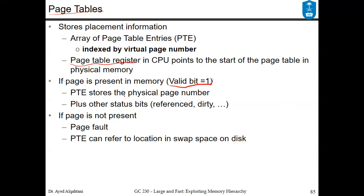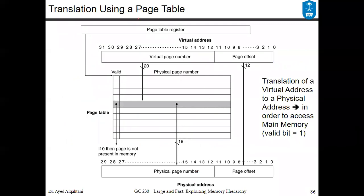The page table entry stores the physical page number plus other status bits like the reference bit, the dirty bit, and others. If the page is not present in memory then we have a page fault and we need to handle it. The page table entry can refer to a location in swap space on the disk. The page table is accessed via the page table register, and entries are indexed by the virtual page number. The page offset is based on the page size — if the page size is 4KB, that's 2 to the power of 12, so bits 0 to 11 are the page offset and are copied directly to the physical address.